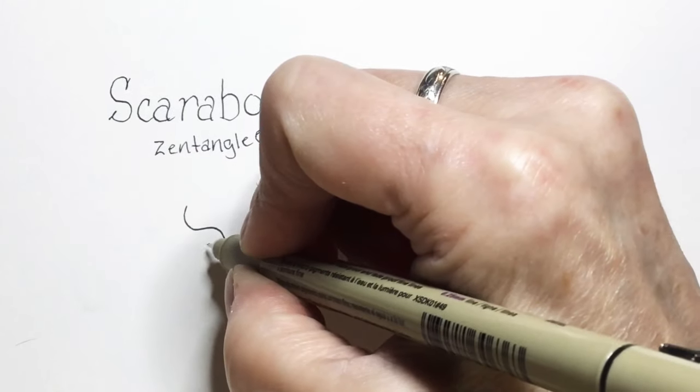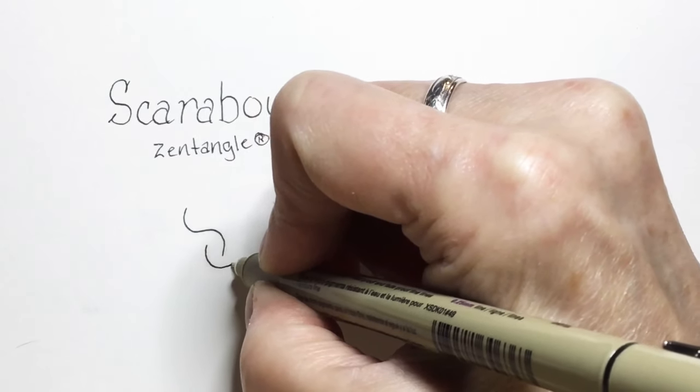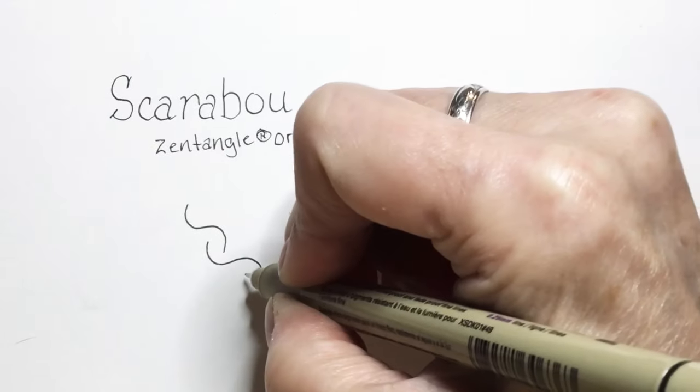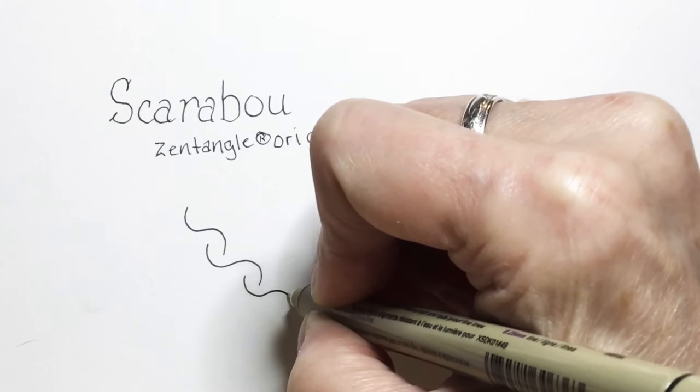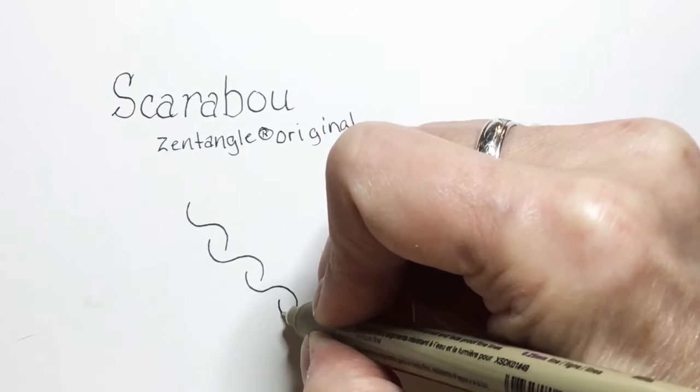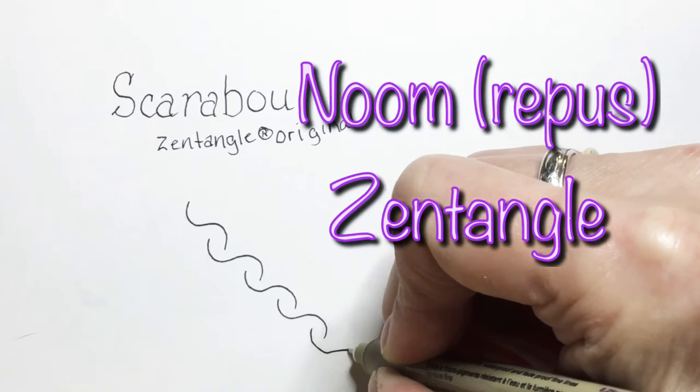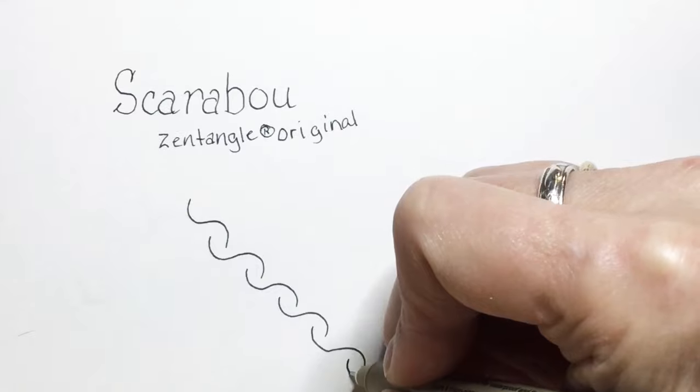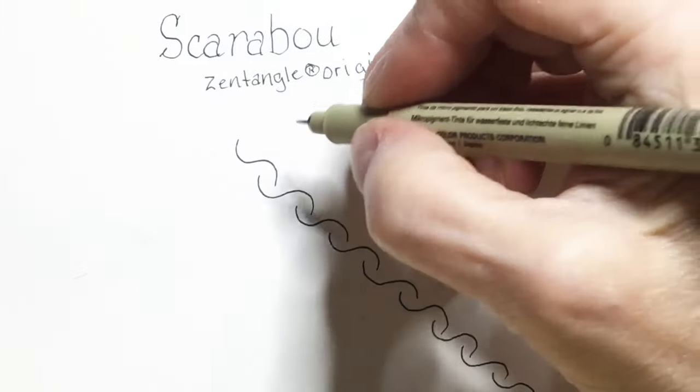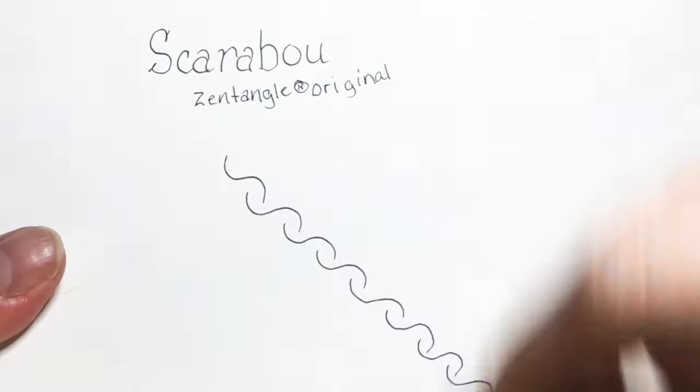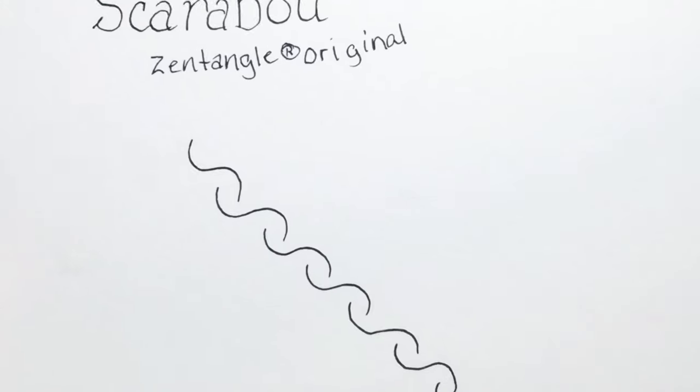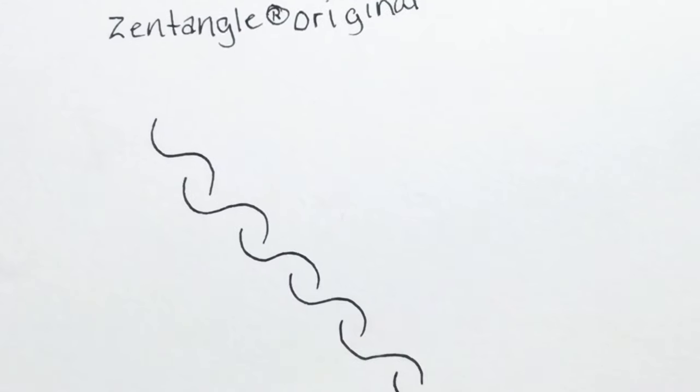So Scarabou is a ribbon pattern, a border pattern, and it starts off very similarly to the pattern Noom Repus. It starts with these very open, shallow S shapes. You start the next one tucked into the bottom well of the one before.